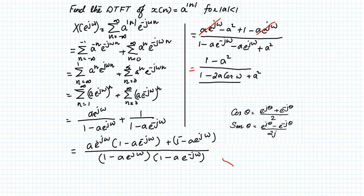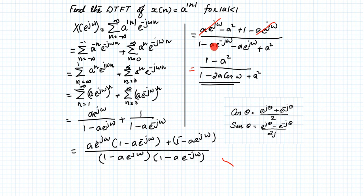So the final result is: if x[n] = a^|n|, then its DTFT is (1 − a²) / (1 − 2a·cos ω + a²). This simplification uses Euler's formula by grouping the two exponential terms, adding a factor of 2 by multiplying numerator and denominator, and obtaining cos ω.